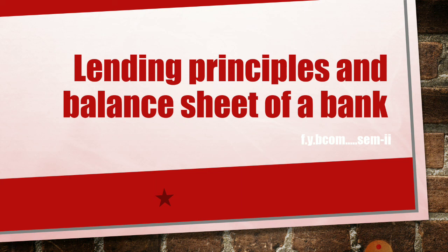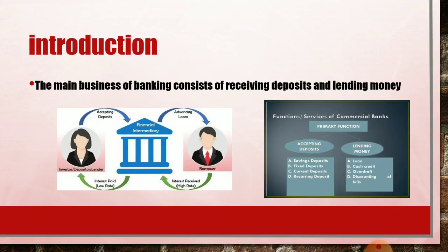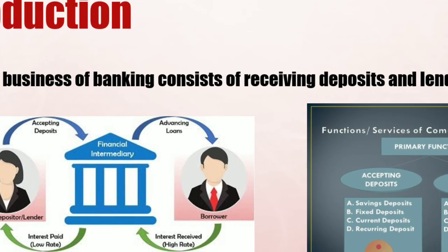When the bank is giving money, it should be in a position to meet unexpected demand. It is essential that when funds are lent, they should also come back to the bank — they should be repaid on demand whenever the bank demands repayment. For such lending, there are some basic principles: safety, liquidity, profitability, and diversification of risk. The main business of banking consists of receiving deposits and lending money.